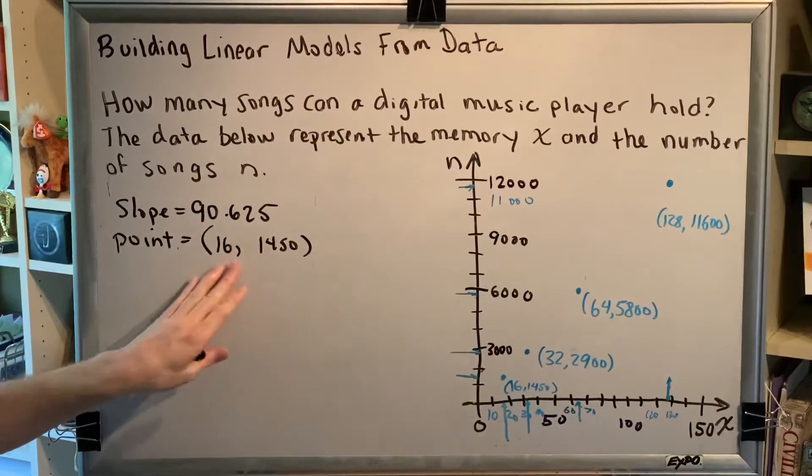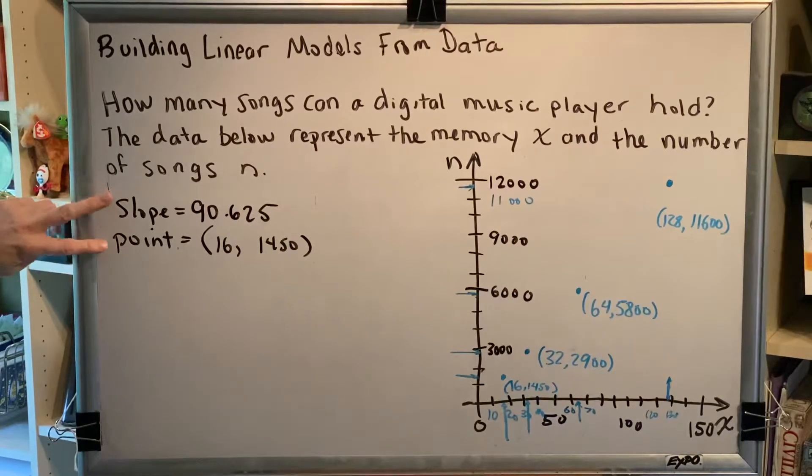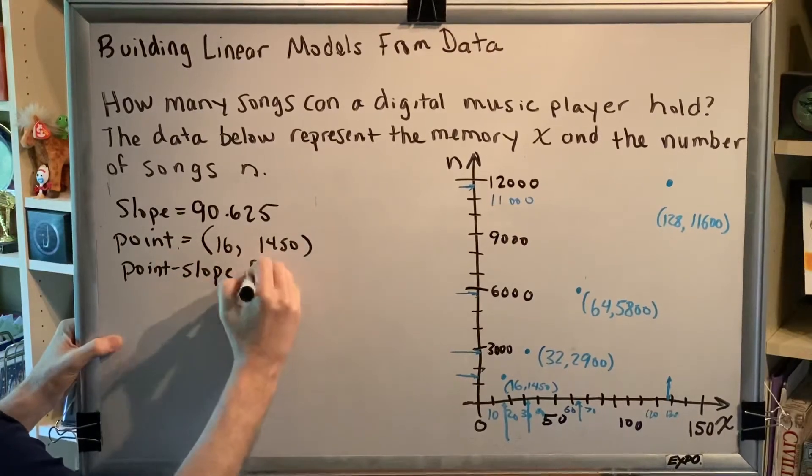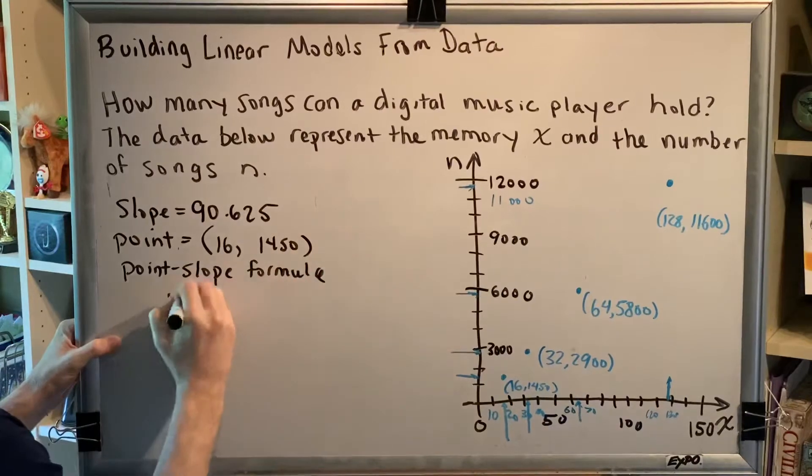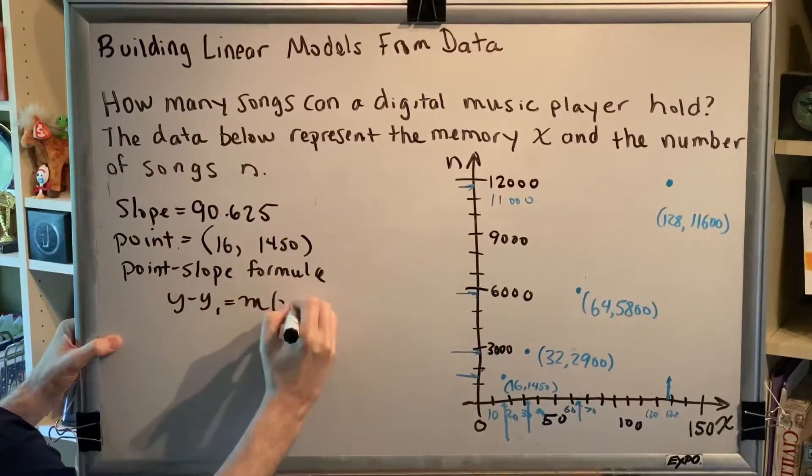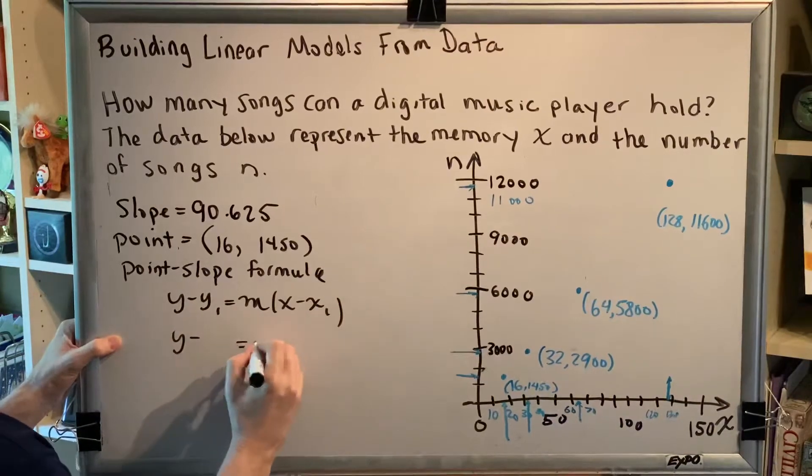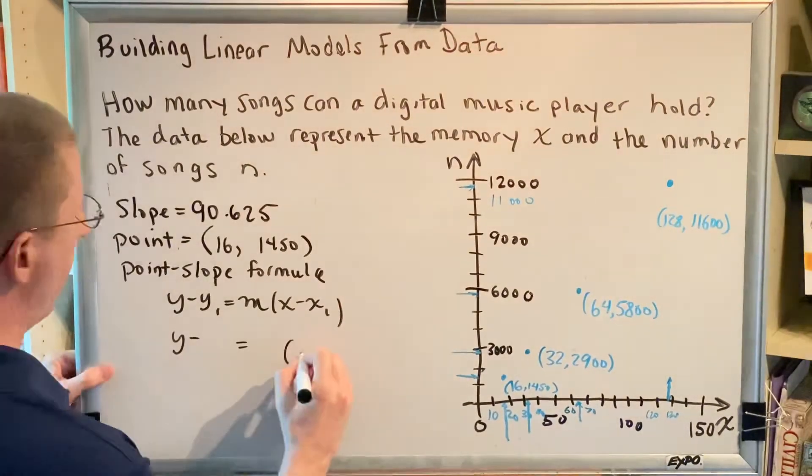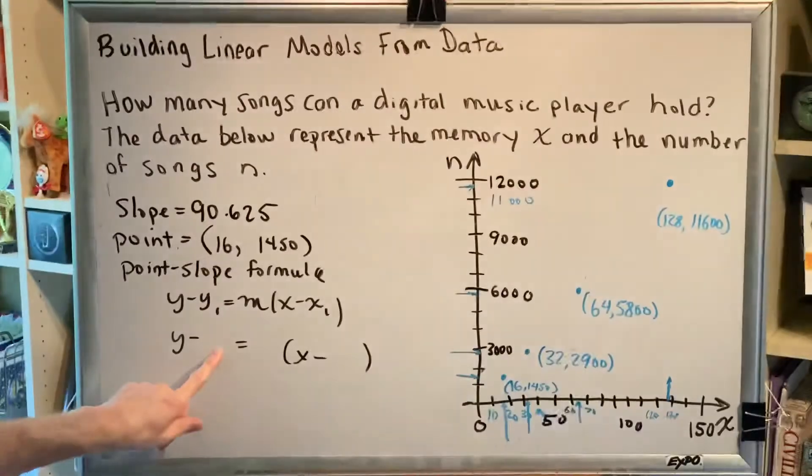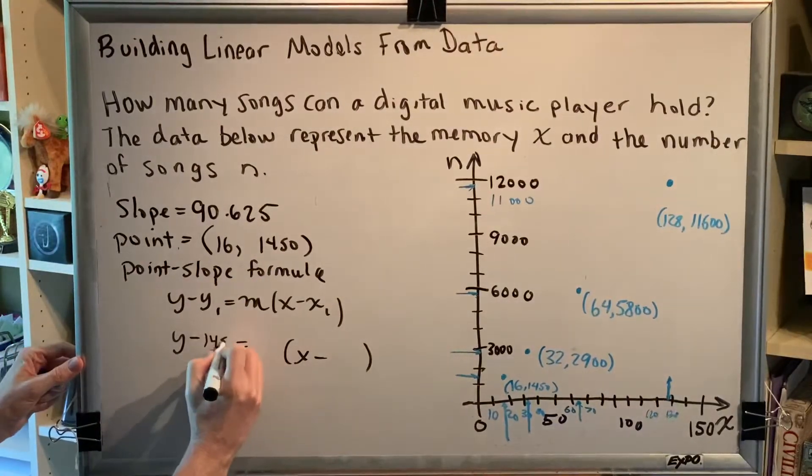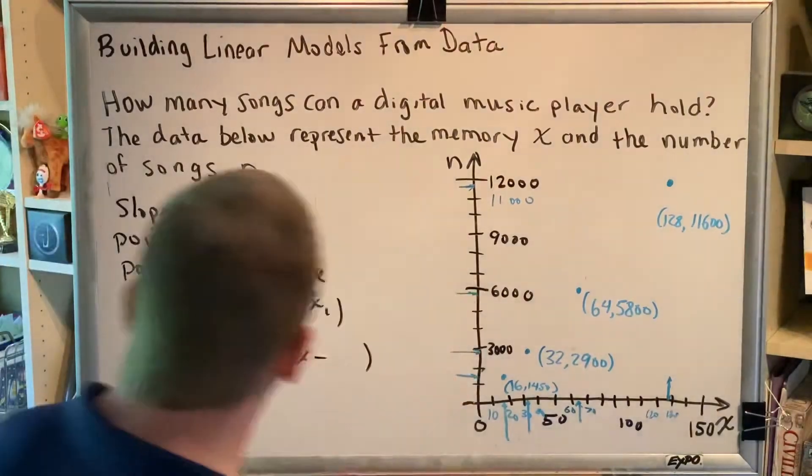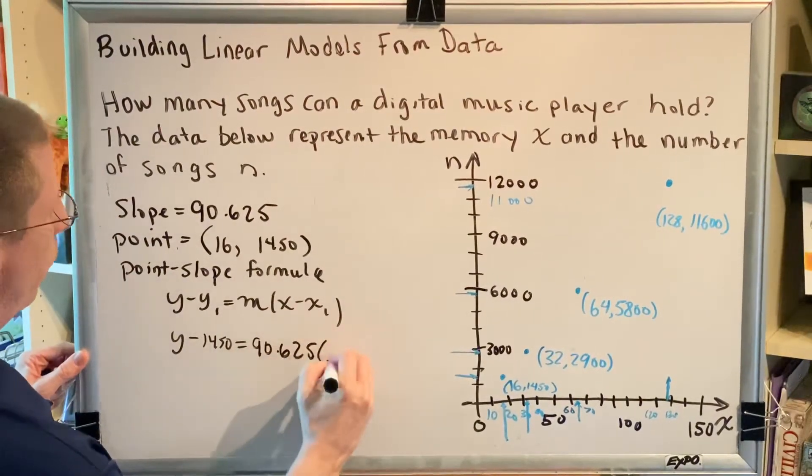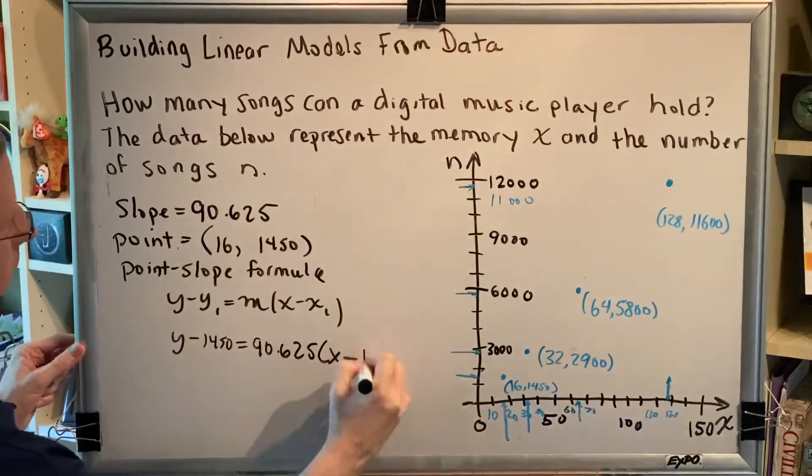The point is not an intercept, so that means we don't have a slope and an intercept, we just have a point and a slope. So we're going to use the point-slope formula. The point-slope formula says y minus y1 is equal to m times x minus x1. So now we can go ahead and plug into our formula. Anywhere we see x1, y1, or m, we're going to put a number. So y1 is the y-coordinate of our point, that's 1450. m is this 90.625 value. And x1 is the x coordinate of our point, which is 16.